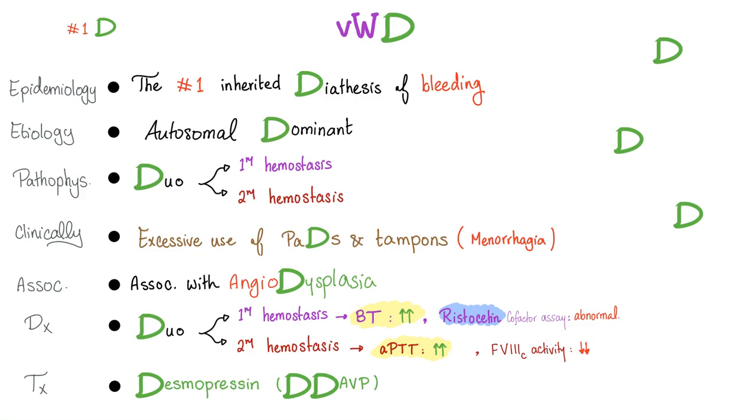Clinically, patients use excessive pads and tampons because of the menorrhagia. Von Willebrand disease is also associated with angiodysplasia.